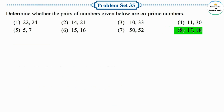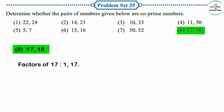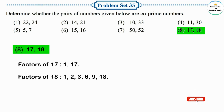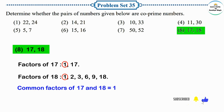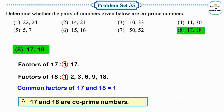Next pair: 17 and 18. Factors of 17: 1 and 17. Factors of 18: 1, 2, 3, 6, 9, 18. The common factor of 17 and 18 is 1. Therefore, 17 and 18 are co-prime numbers.